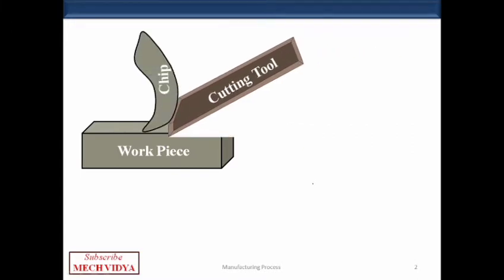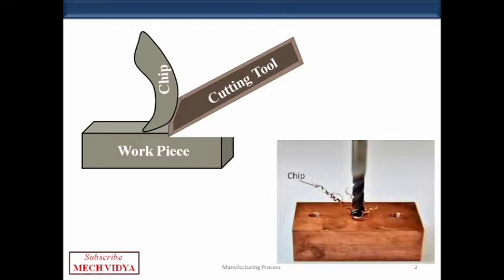The tool starts removing unwanted metal from the workpiece in the form of chips. What are these chips? Let us try to understand this with the help of this photograph. This is a drilling process and we can see some spiral shaped objects coming out from the holes. These are nothing but unwanted objects which we call chips in machining.